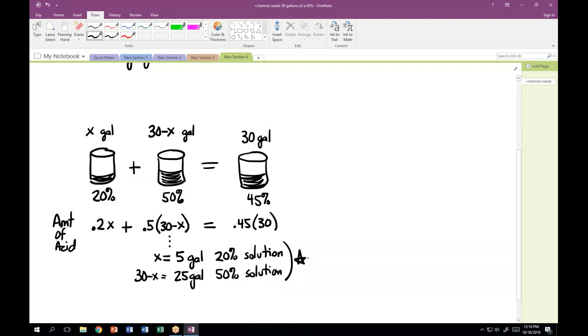Five gallons of the 20% and 25 gallons of the 50%. And again, that was based on looking at how much of what we sometimes call the concentrate that's inside of a solution. So if you're going to do an antifreeze problem, you would look at how strong the solution of antifreeze is. Maybe it's 40% antifreeze, and the rest of that, of course, would be water.